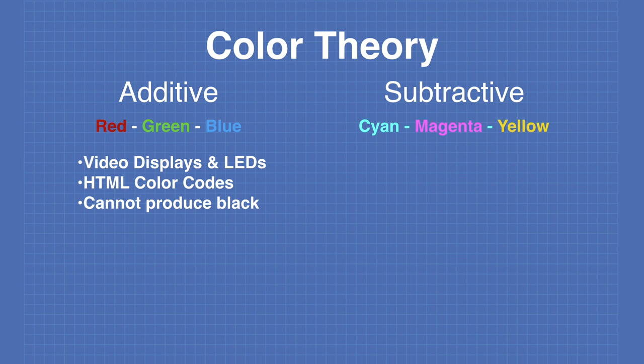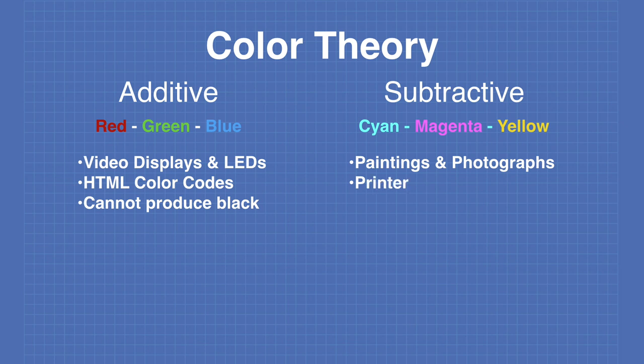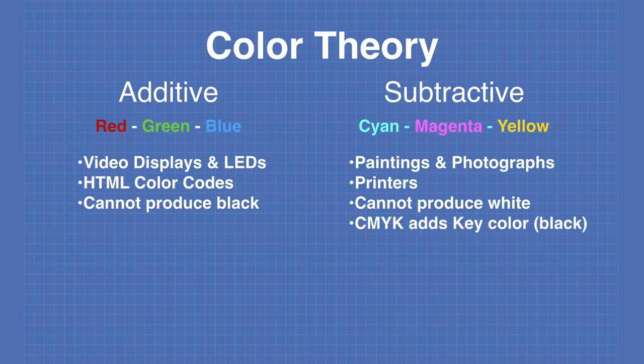The RGB color scheme cannot produce black; instead it is generally presented on a black background. Cyan, magenta, and yellow are used in paintings and photographs. Printers also use the CMY color scheme, which cannot produce white and is generally presented on a white background. The CMYK color scheme adds a key color of black, and this is often used in printers.